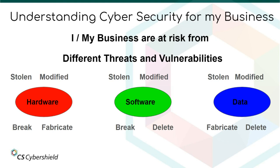Your business is at risk in three different sections: hardware, software, and data. Each different section has four areas where it can be affected by threats and vulnerabilities, and each of these are very specific and need to be catered for in a distinct way with cyber security. That will be mentioned later on or in following videos depending on our time.